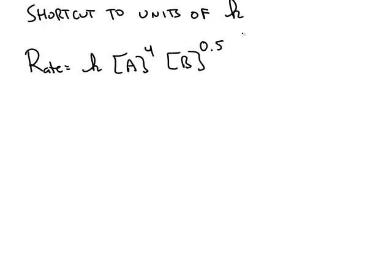Here's a quick way to get the units of the rate constant k. Let's say you had a rate law like this, a to the fourth power, b to the 0.5 power.